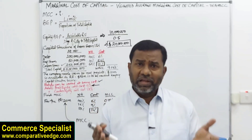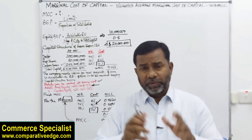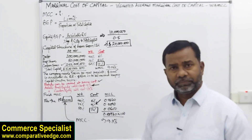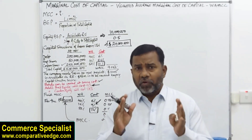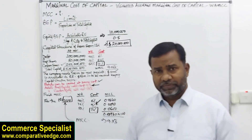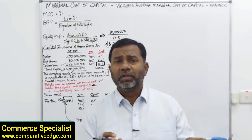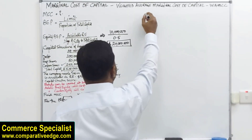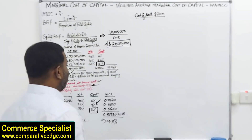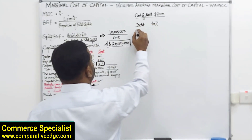Now let's see what the cost is for the remaining 80 million. Why 80 million? Because 100 million was to be raised: 10 million was already available in retained earnings, and 10 million came from preference shares in the first 20 million tranche. So out of 90 million to be raised, 10 million from preference shares is already accounted for, leaving 80 million. The capital structure weights remain: debt 40%, preference equity 10%, common equity 50%.